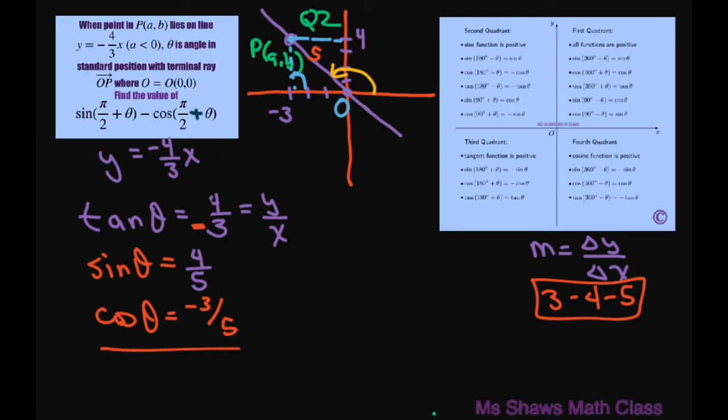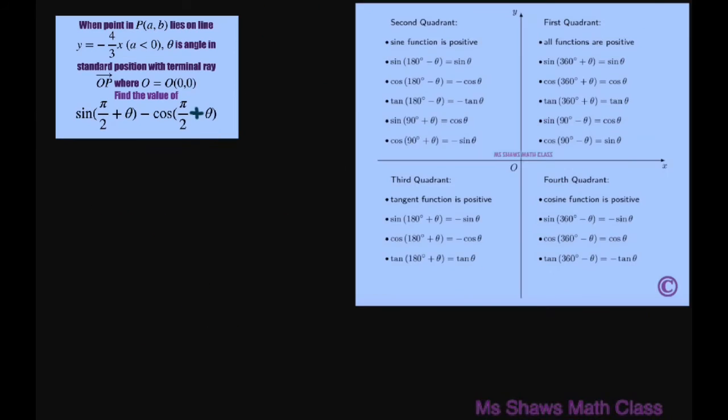Alright, so now all we have to do is fill in this formula here. We're going to use these reference angles here. Alright. So basically, sine of pi divided by two plus theta is right here. That equals cosine. So this is going to be cosine of theta.